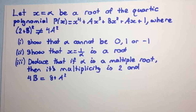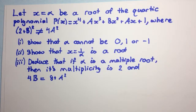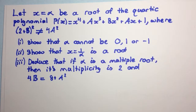Welcome to the video everyone. Today we're going to be looking at question 7b from the 1991 HSC 4-Unit exam. The question says: let x equals alpha be a root of the quartic polynomial p of x equals x to the power of 4 plus x cubed plus bx squared plus ax plus 1, where 2 plus b all squared is not equal to 4a squared. Part 1: show that alpha cannot be 0, 1, or minus 1.